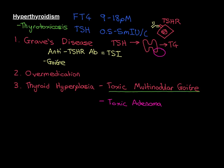Whilst we're on the subject of tumours — thyroid cancer does occur, but it is very rare for thyroid cancer to actually produce hyperthyroidism. Usually, if you get a malignant tumour of the thyroid gland, it's non-productive and doesn't produce thyroid hormone successfully. It's not unheard of for thyroid cancer to cause hyperthyroidism, but it's quite rare. In contrast, these benign thyroid adenomas can actually cause problems by leading to hyperthyroidism, despite not being cancerous or capable of metastasising.